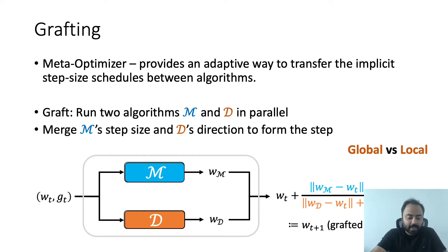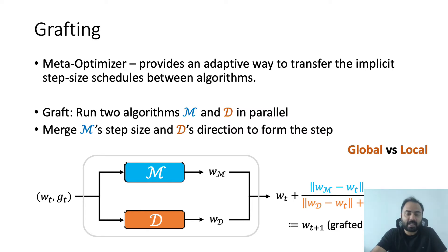In this work, we propose a meta-optimizer which we call grafting, aimed at alleviating these confounds. Grafting is a process which aims to transfer the implicit step-size schedule induced by one algorithm to another. The main idea is to run two algorithms M and D in parallel, each with their own learning rate schedules, and take a step which is of the same magnitude as the step prescribed by M and in the same direction as the step prescribed by D. You can do this separately over parameter groups like layers, or globally.